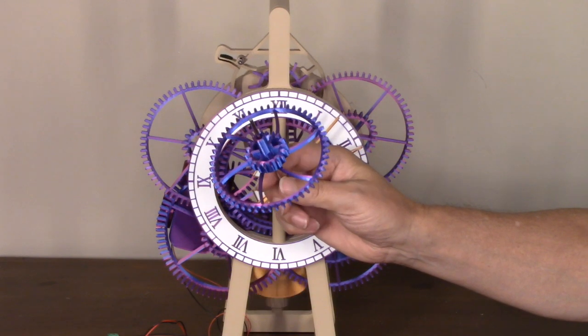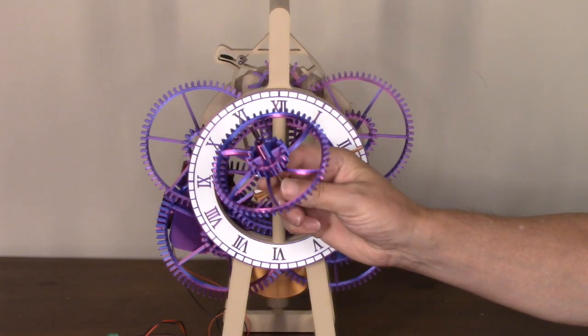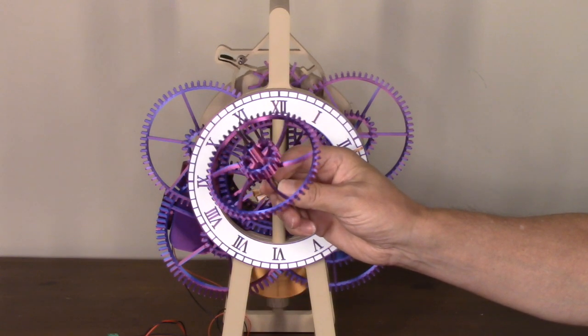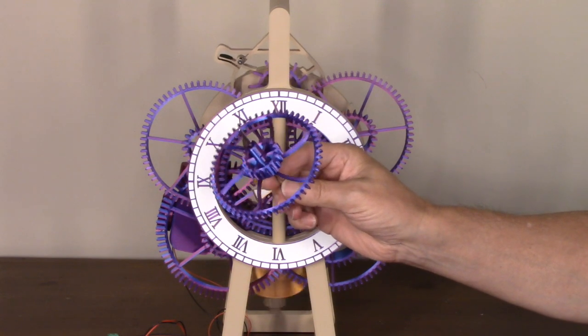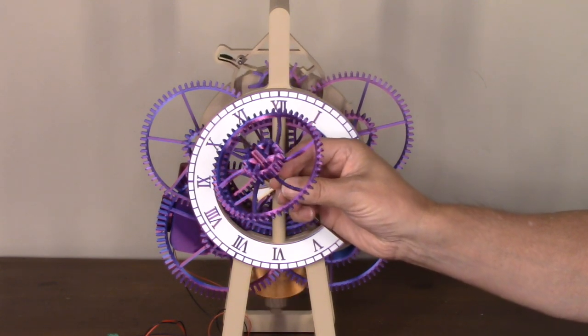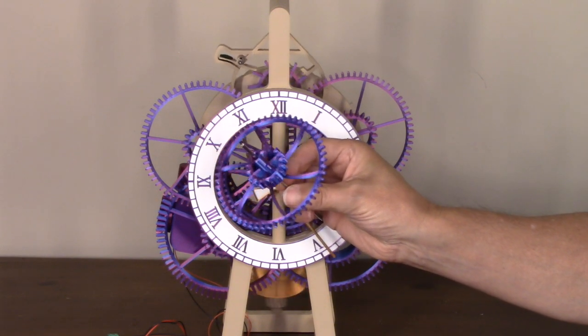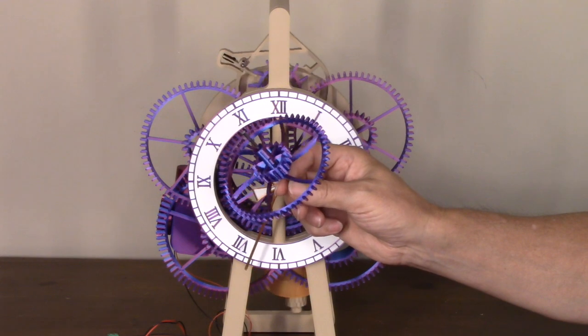This clock is printed using Matterhacker's Quantum PLA and this is my new favorite filament. As you can see on this gear as it's rotating, one side is blue and the other side is purple. It gives a really nice look for the clock gears. It's a little bit pricey but I believe it's well worth it.